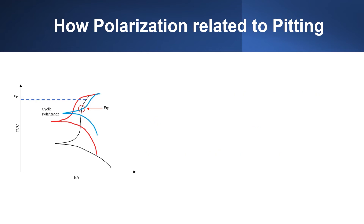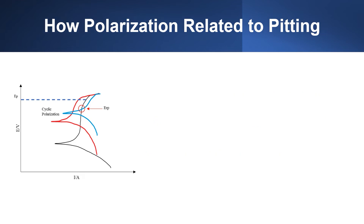Furthermore, materials exhibiting higher values of pitting potential, EP, and return passivation potential, ERP, are more resistant to pitting corrosion. Cyclic polarization experiments are commonly used for this purpose.